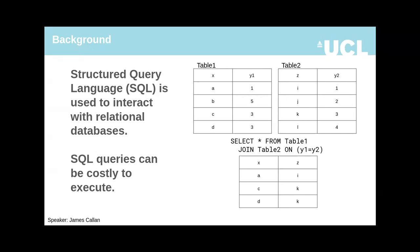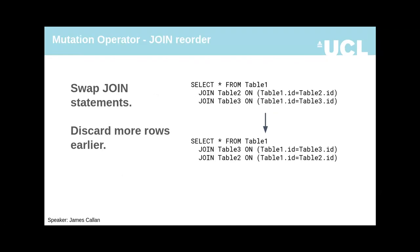We specifically target join statements, which select entries from different tables with some matching value, discarding those with no match. We propose three mutation operators for join statements. Our first mutation operator simply reorders join statements. Ideally we want the statements which discard the most entries first, so later queries have to check fewer entries, which saves time.